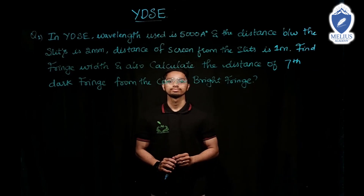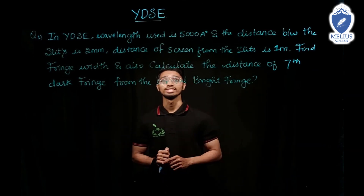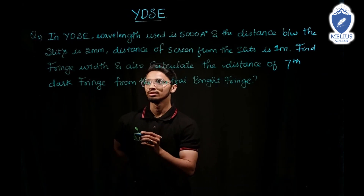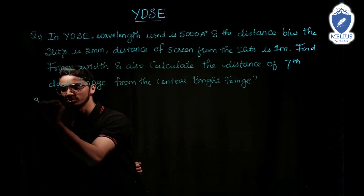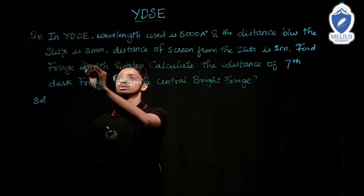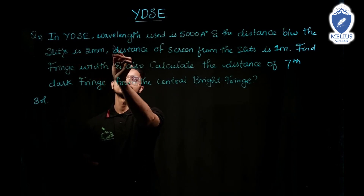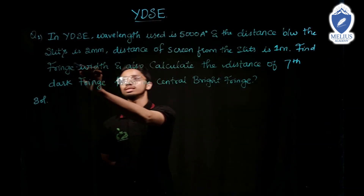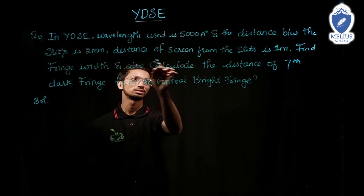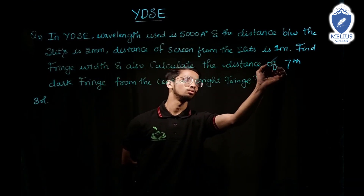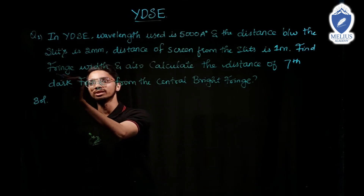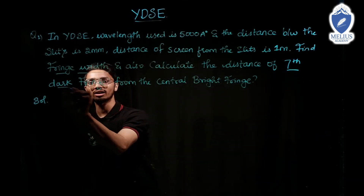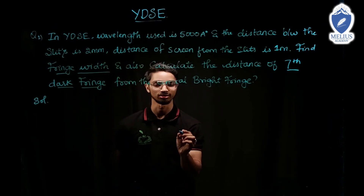Hello students, as we discussed the topic YDSE in the last video, now we will discuss the numericals of the same topic. First question: in YDSE, the wavelength used is 5000 Angstrom and the distance between the slits is 2 mm. Distance of the screen from the slits is 1 meter. Find the fringe width and also calculate the position of the 7th dark fringe from the central bright fringe.